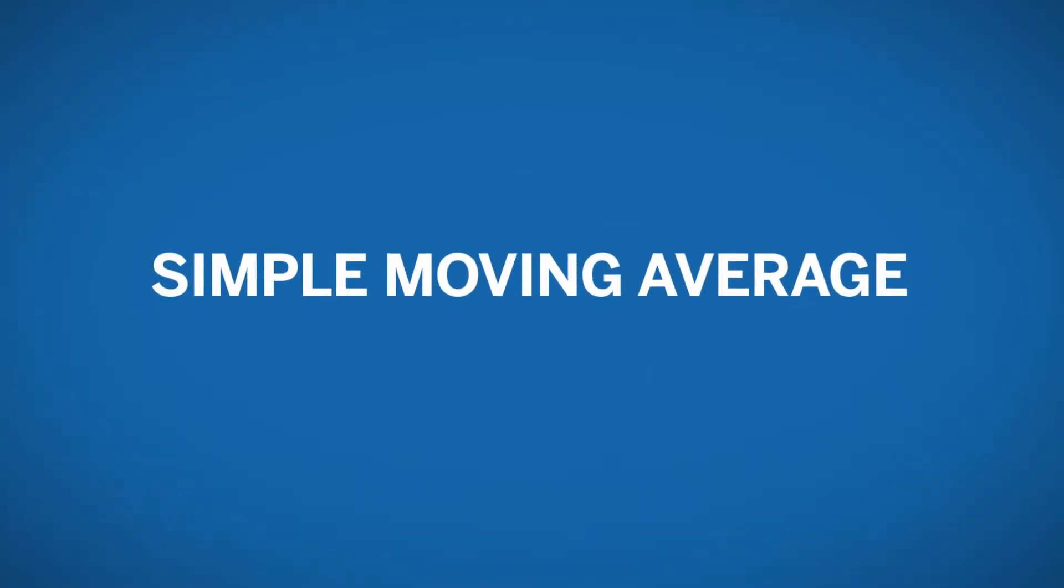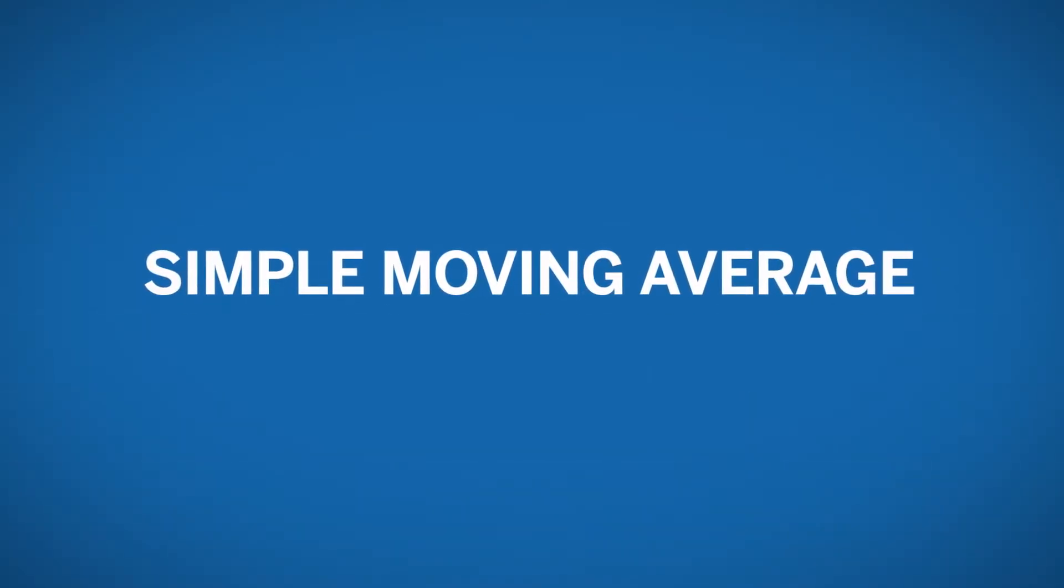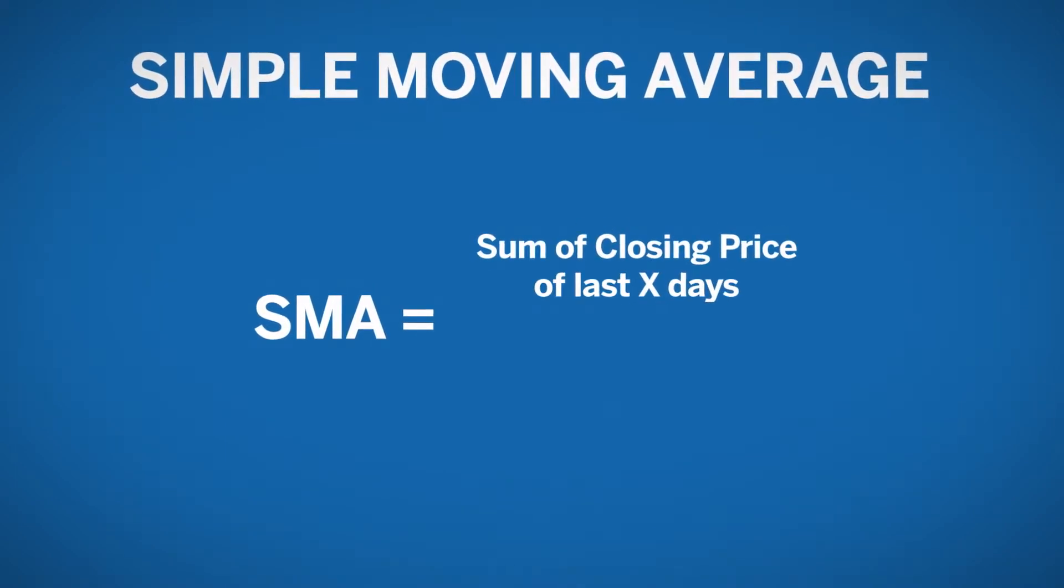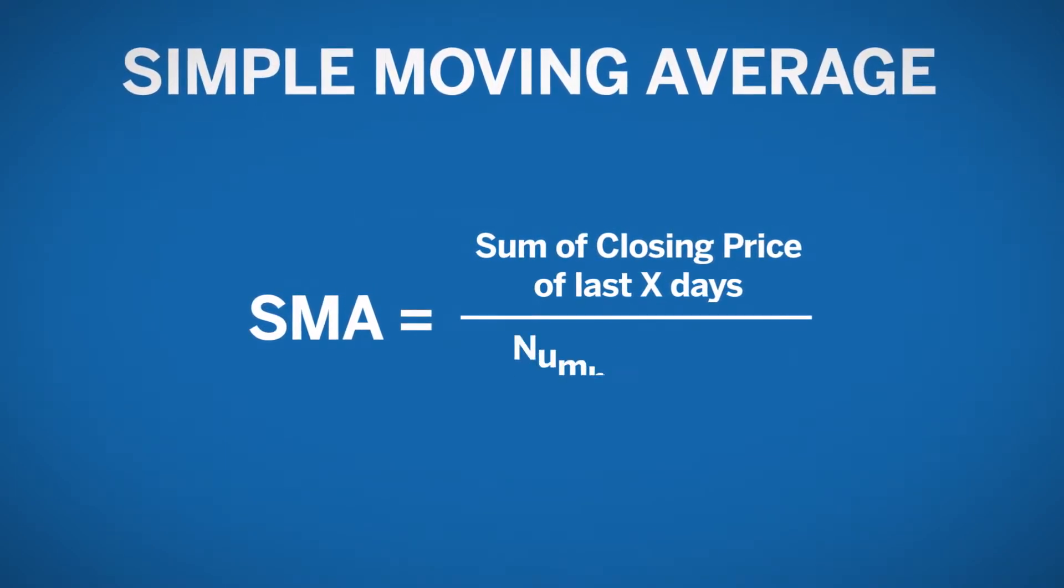A simple moving average is the most basic of moving averages. It is calculated by summing up the closing prices of the last X days and dividing by the number of days.